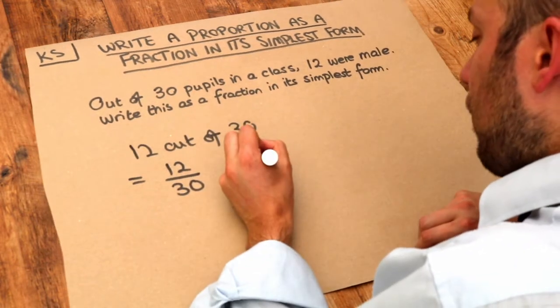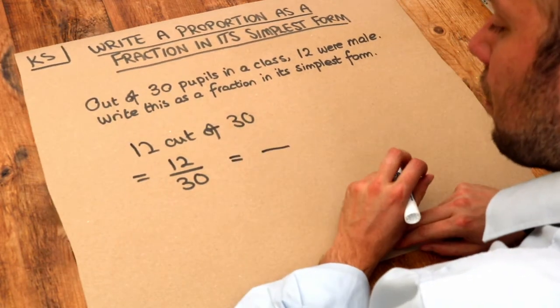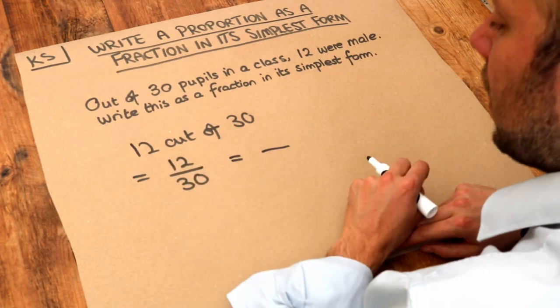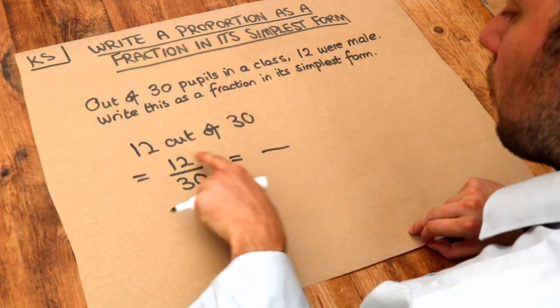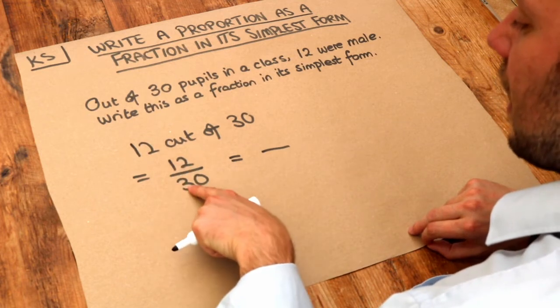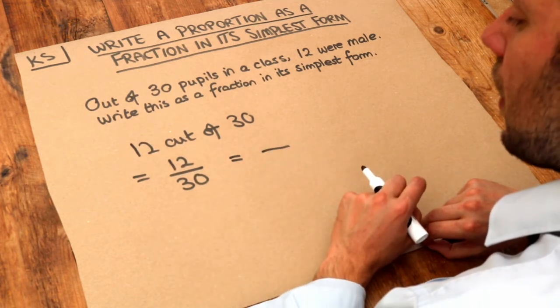To simplify a fraction, we think of the biggest factor of 12 and 30. What can we divide both of these numbers by? Well, 6 is a factor of 12 and 6 is also a factor of 30.